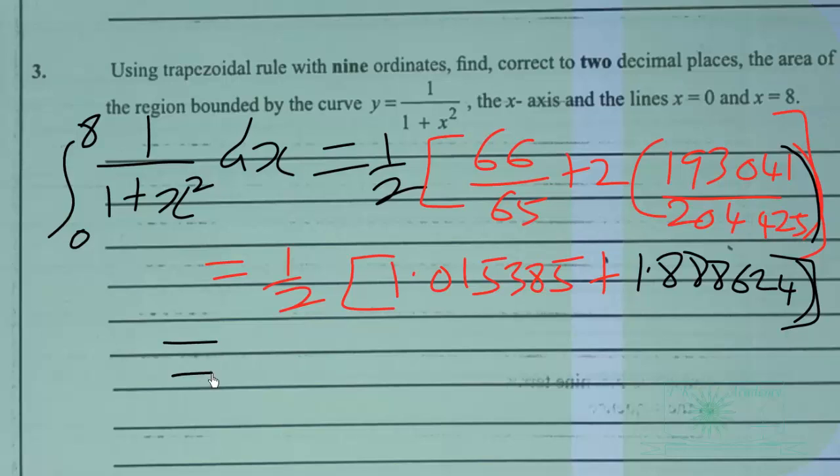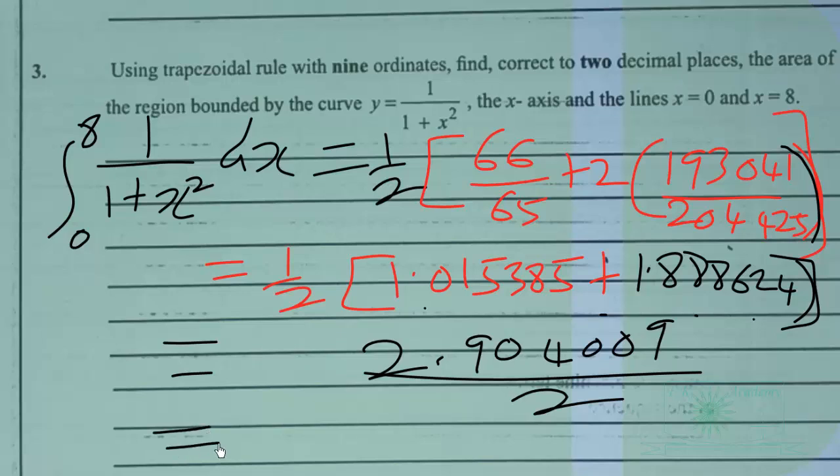So we have to simplify. When we add whatever is here, we are obtaining 2.904009. So 2.904009 all over 2. So this simplifies to 1.452004.